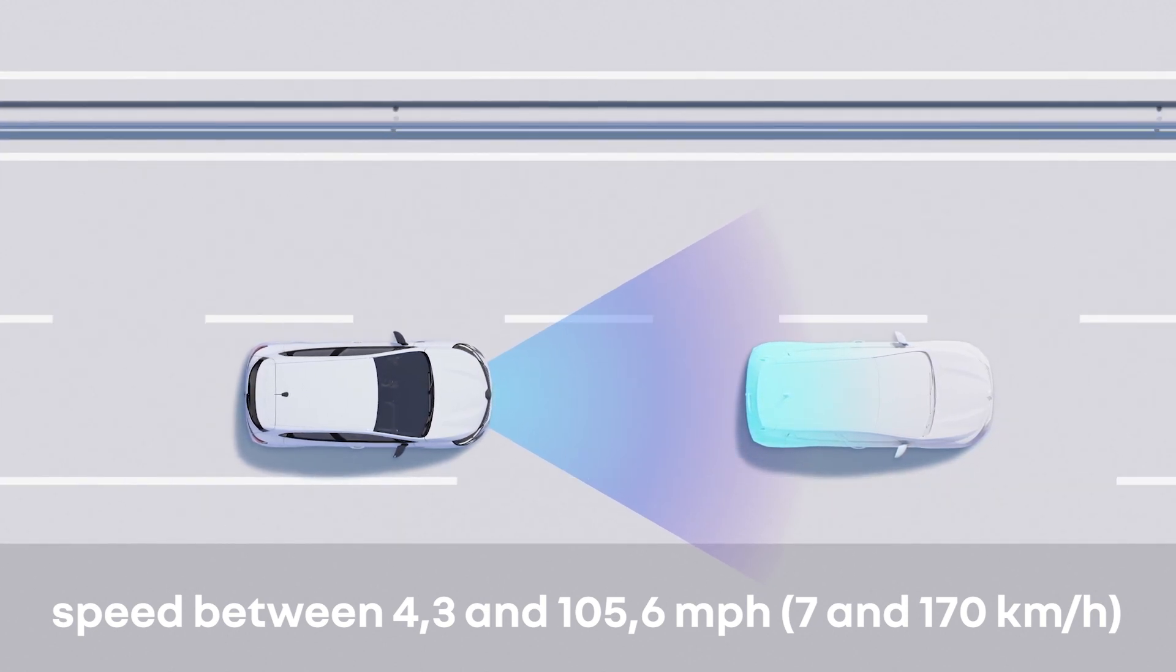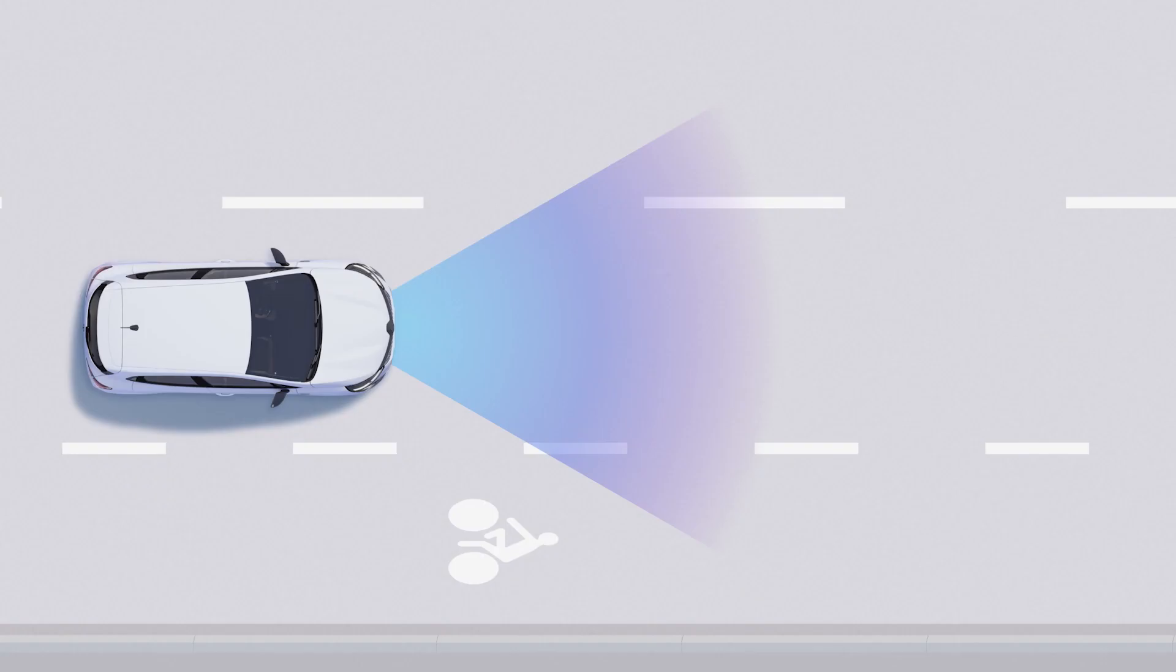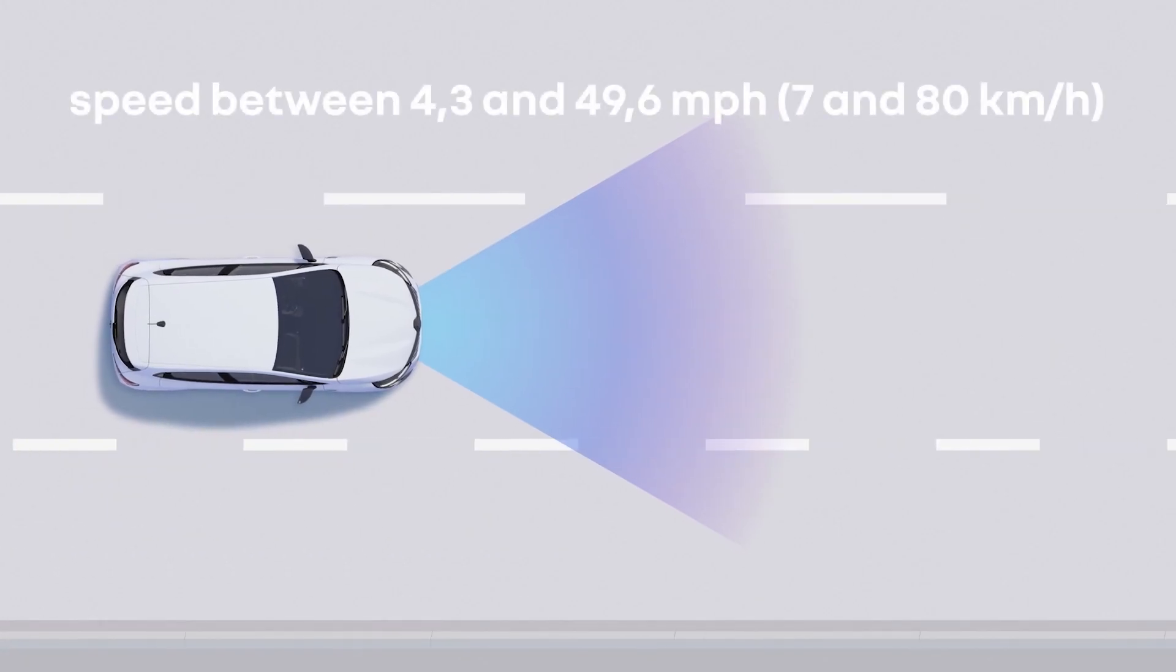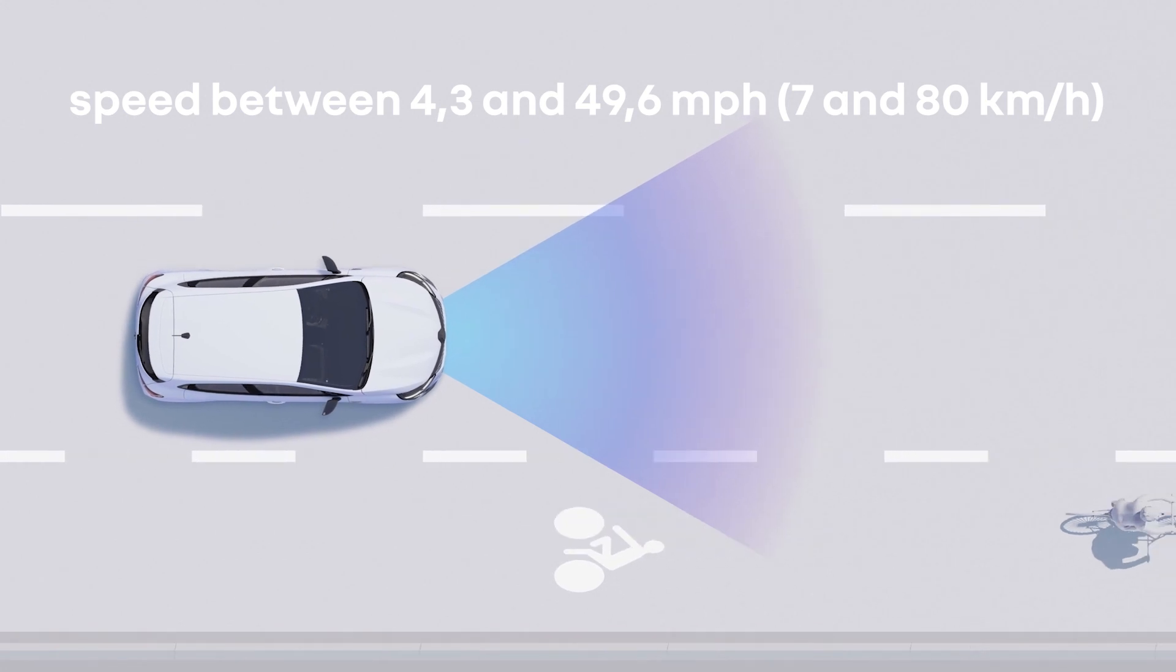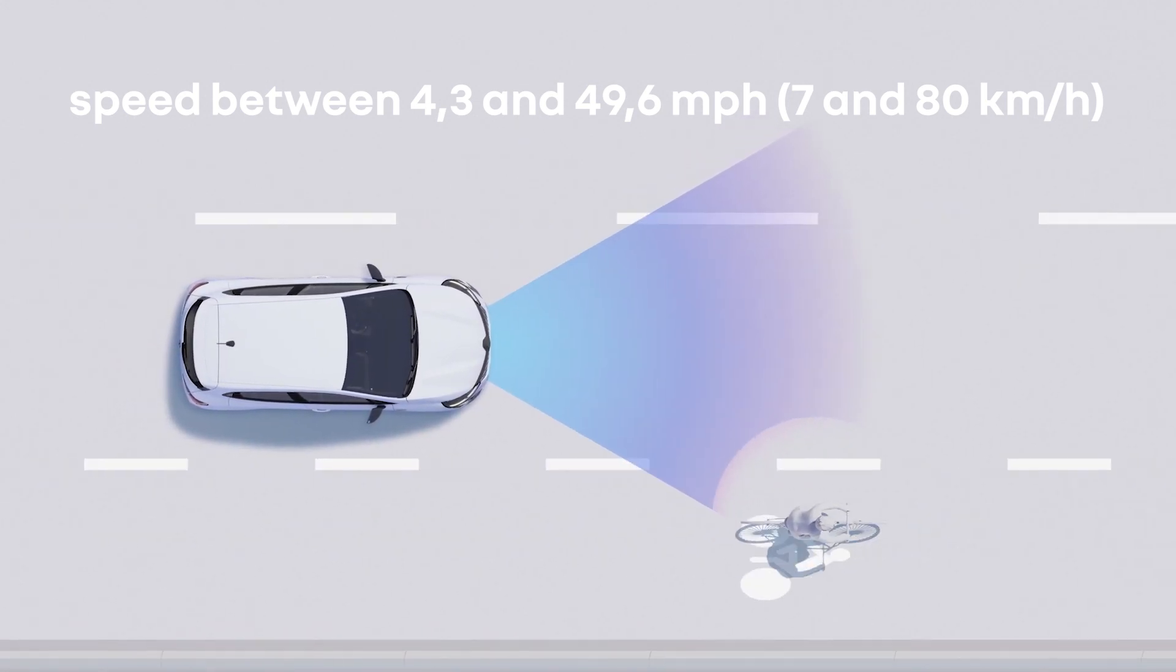Meanwhile, stationary vehicles, pedestrians, and cyclists are detected when you are driving at between 4 and 49 miles per hour or 7 and 80 kilometers per hour.